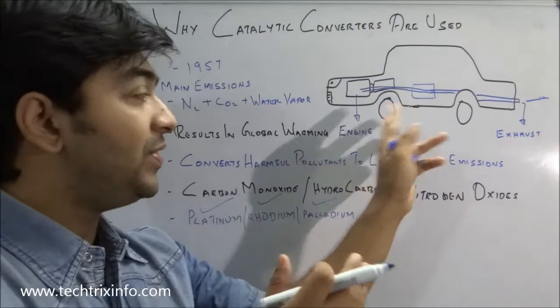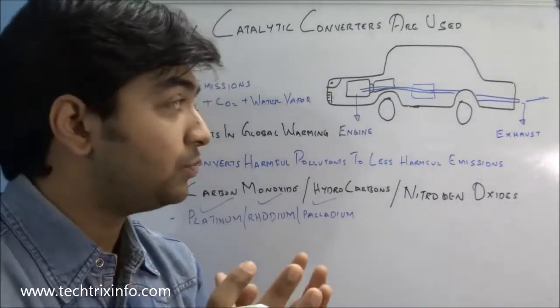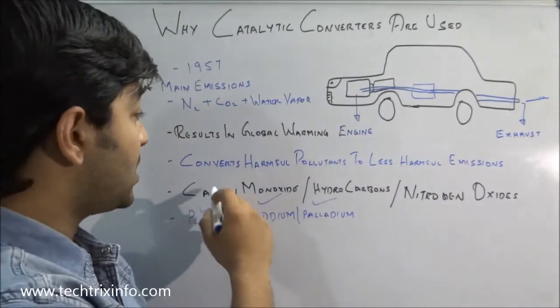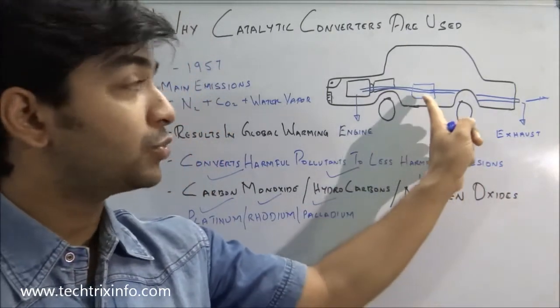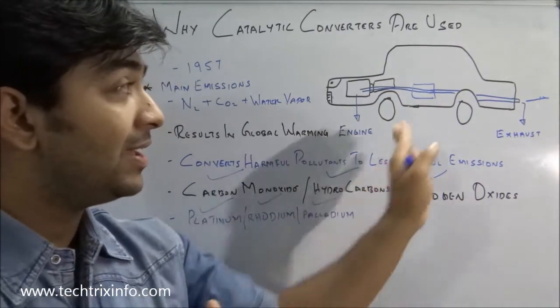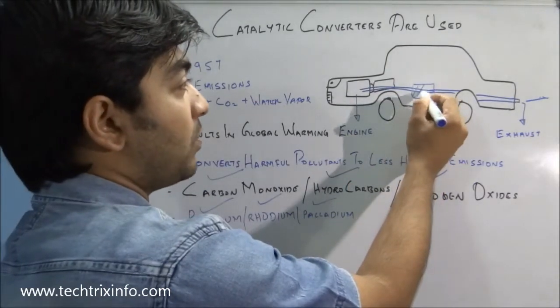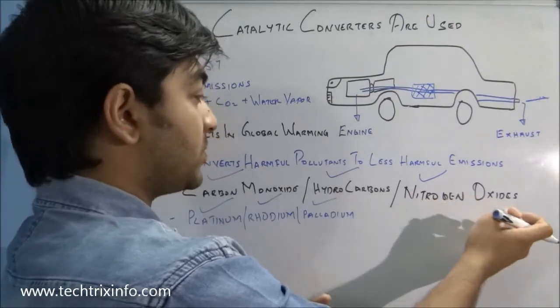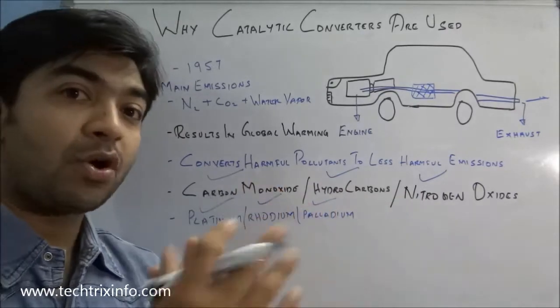These metals play a very important role. They work like a catalyst which makes a chemical reaction. We have carbon monoxide, hydrocarbons, nitrogen oxides coming through the exhaust. The platinum, rhodium, or palladium make an oxidation reaction in the catalytic converter and divide nitrogen oxide into nitrogen or oxygen, hydrocarbons into hydrogen or carbon dioxide, or carbon monoxide into oxygen or carbon.